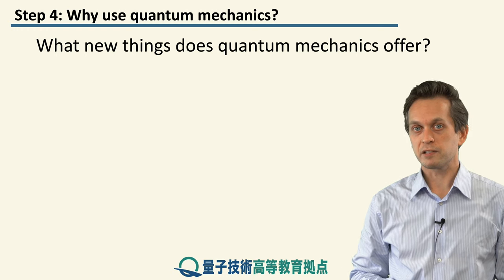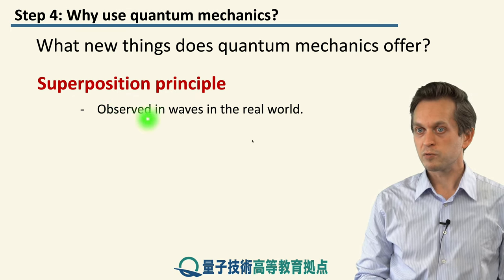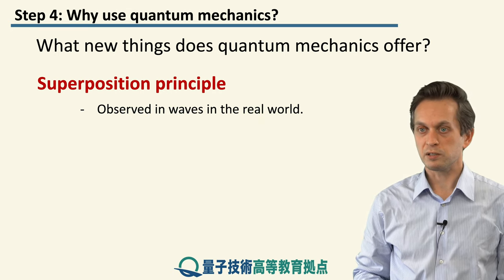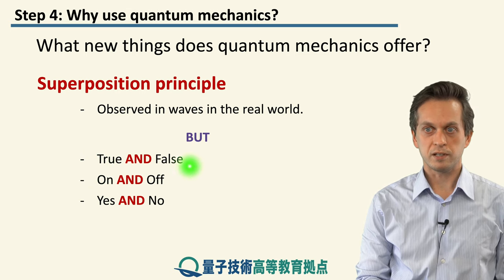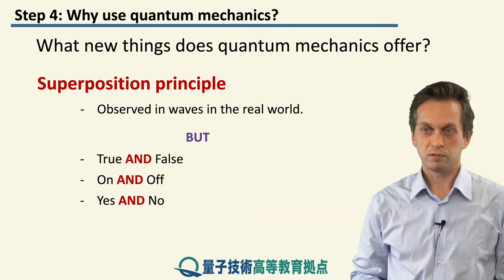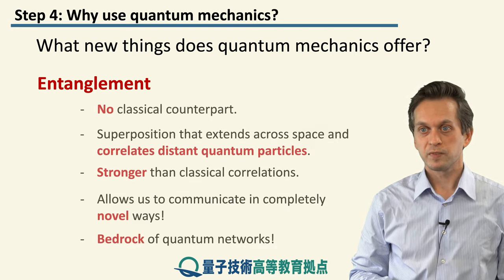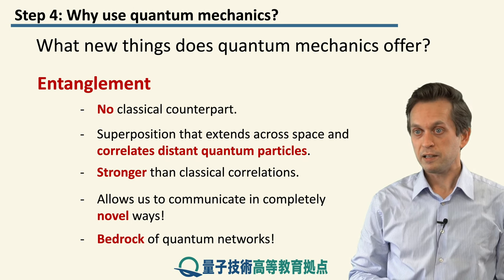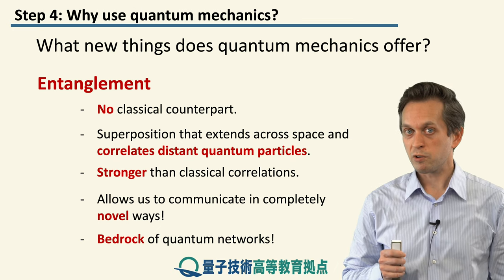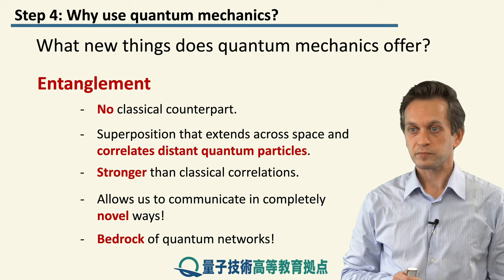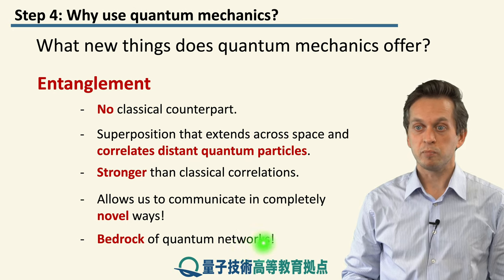So, what are the things that quantum mechanics offers? Number one is the superposition principle. This principle is not really anything new in the classical world, because we can see the superposition of waves, and we use it in communication. But in the context of quantum communication, what we mean is superposition of bits — we can have things that are both true and false at the same time; they are on and off, a yes or a no. And when we expand the principle of superposition to multiple particles, we get entanglement. Entanglement has no classical counterpart whatsoever, and it correlates distant quantum objects across large distances of space. It's a correlation stronger than any classical correlation possible, and it will allow us to communicate in completely new ways. Entanglement forms the main bedrock for quantum networks.